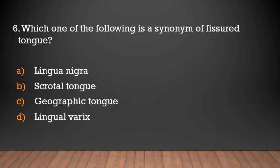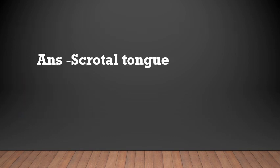Which of the following is a synonym of fissured tongue? Options: Lingua nigra, scrotal tongue, geographic tongue, lingual varices. The answer is scrotal tongue — fissured tongue is otherwise known as scrotal tongue.